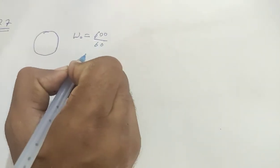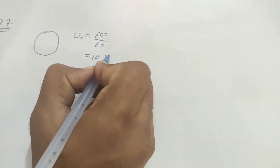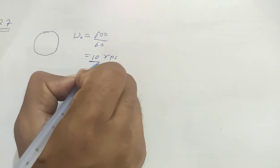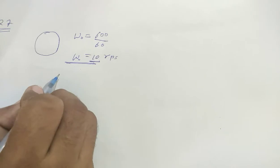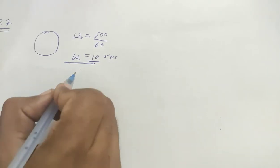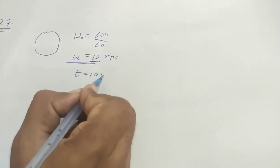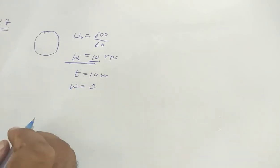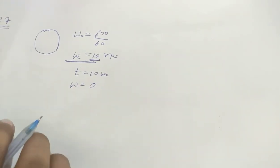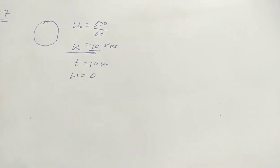Now we apply the torque for 10 seconds, so the final speed will be zero at rest. Now we have to find the angular deceleration, which is alpha, and next we have to find the angular velocity 5 seconds after the application of the torque.